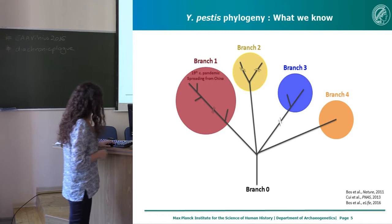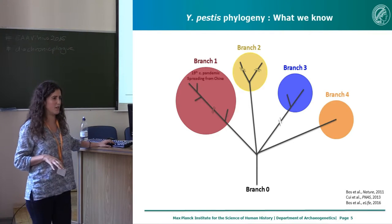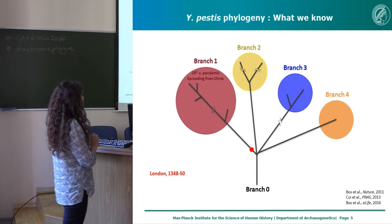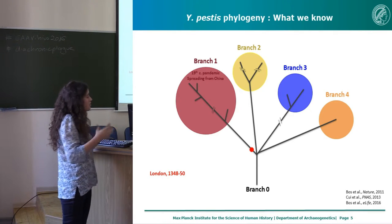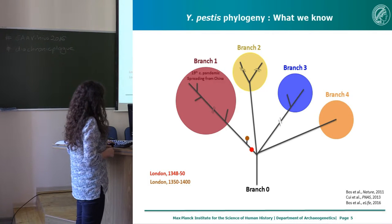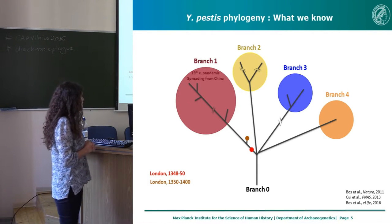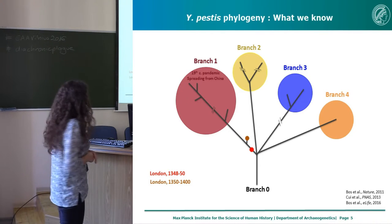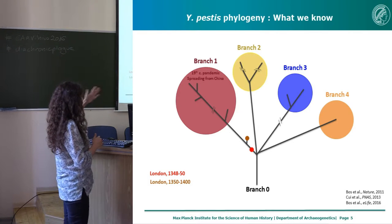What we now know from sequencing Yersinia pestis genomes from the second plague pandemic is that the Black Death genome sequenced in 2011 from plague victims in London falls very close to this radiation event — perhaps this was the event that gave rise to most of the plague diversity that exists around the world today. A second strain mentioned in the same 2011 study concerns an isolate from an outbreak in the second half of the 14th century in London, after the Black Death. This strain seems to be more derived on branch one and therefore more closely related to the third plague pandemic strains.